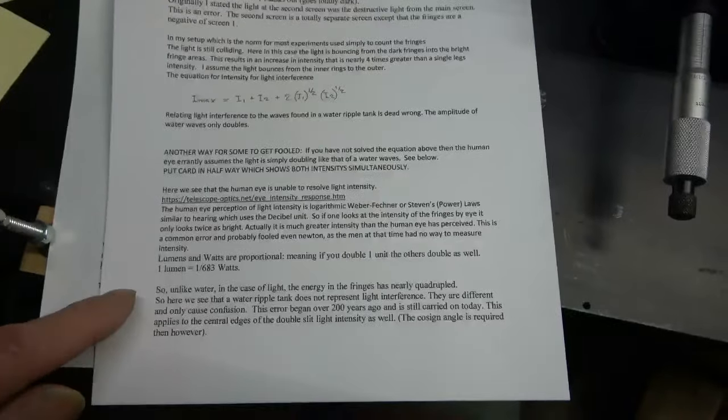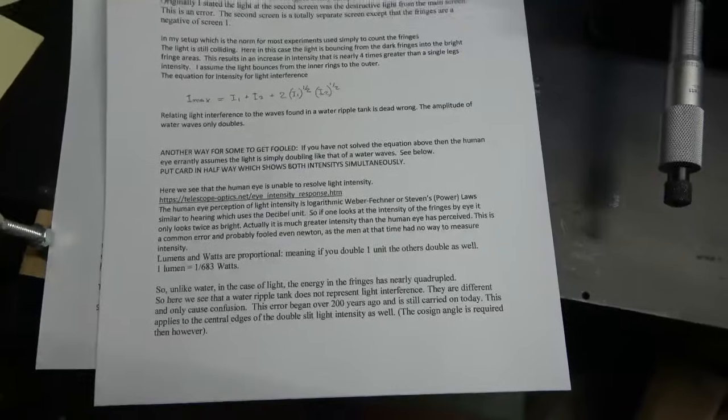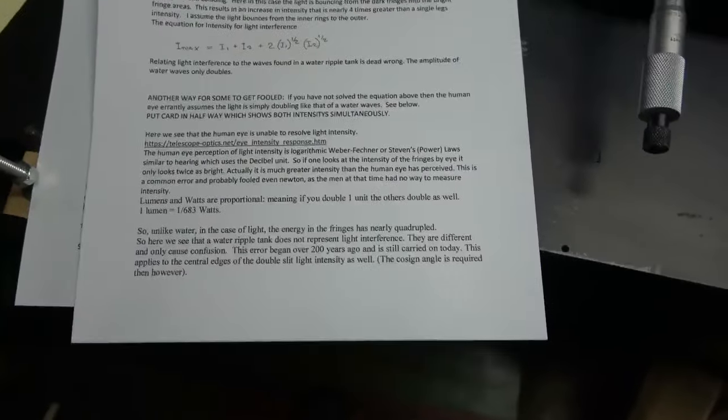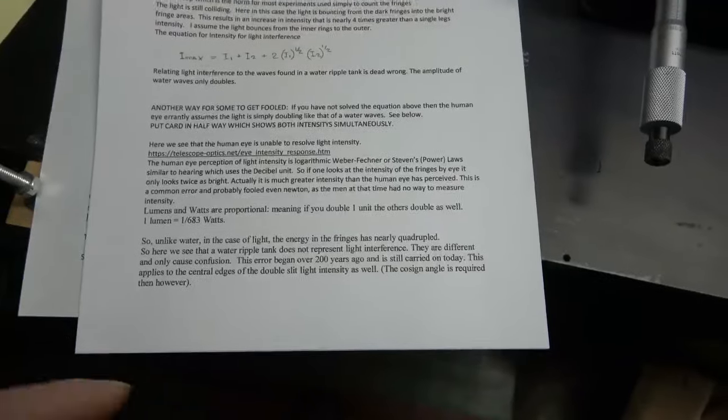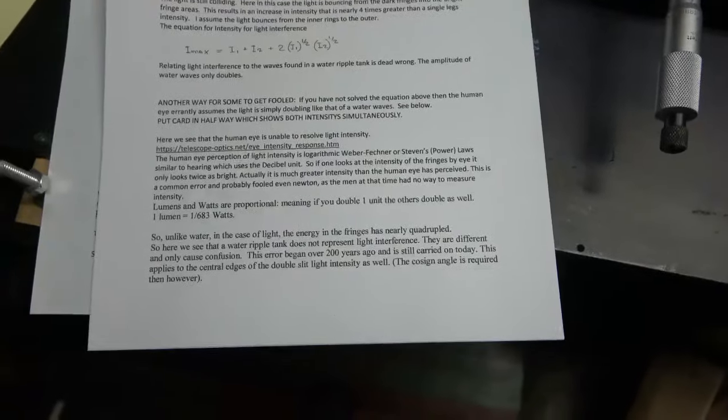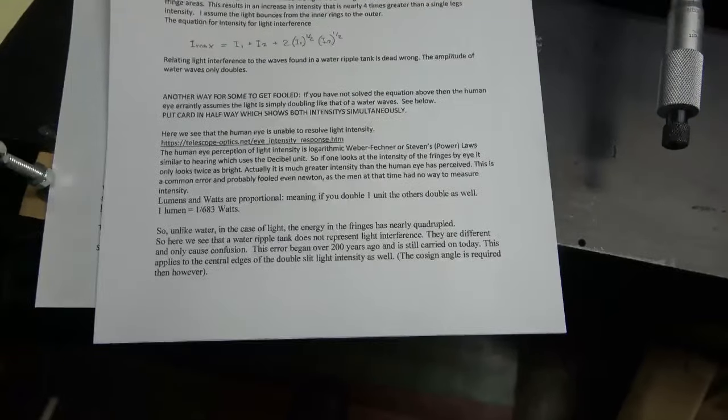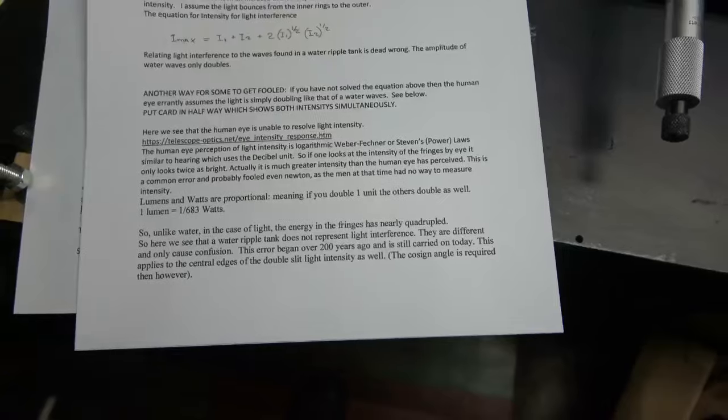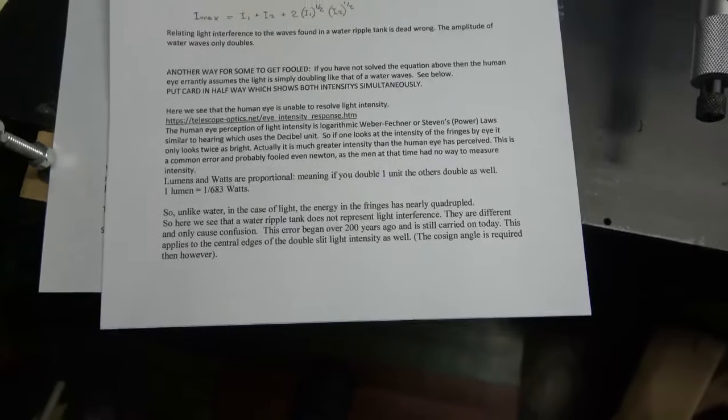Lumens and watts are proportional. Meaning if you double one unit, the others double as well. One lumen equals one over 683 watts. So unlike water, in the case of light, the energy of the fringes has nearly quadrupled. So here we see that a water ripple tank does not represent light interference. They are different and only cause confusion.